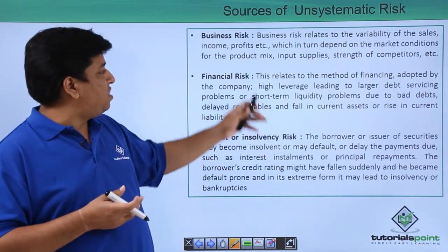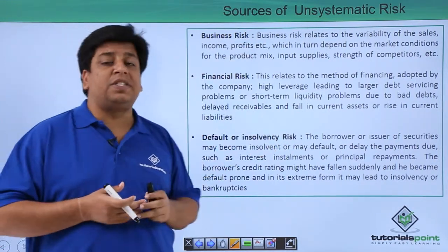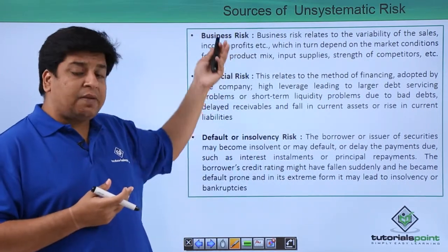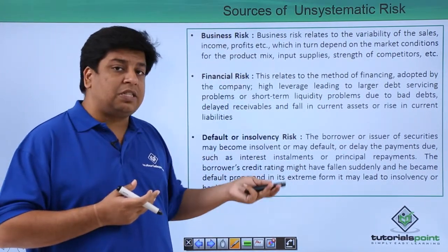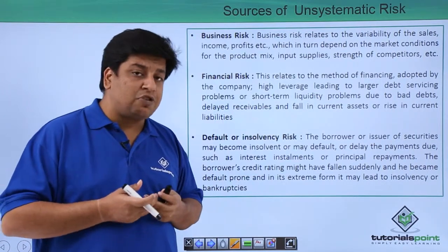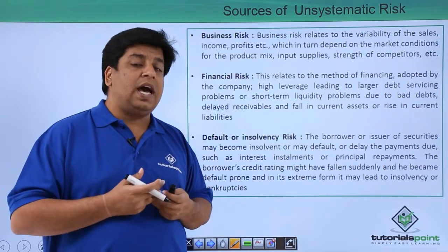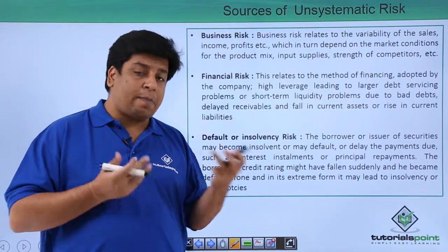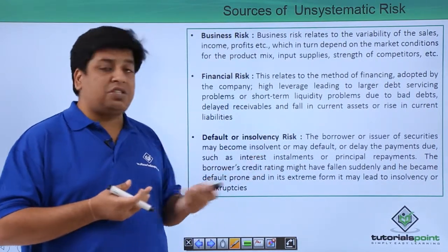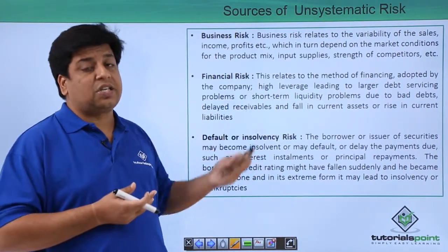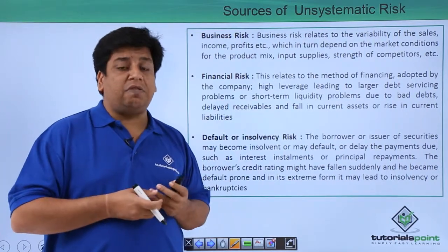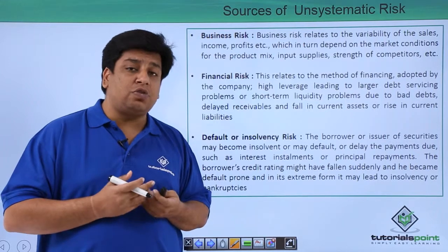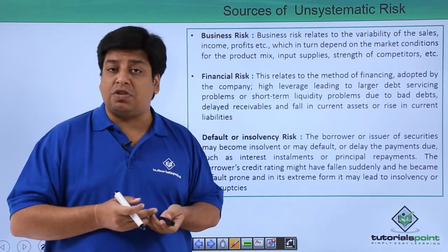Insolvency risk is an outcome of business risk and financial risk. So all three risks, by taking the right decisions in the business, are very much controllable and are within the hands of the business managers and top executives to take the right decisions. These risks, to a larger extent, are very much controllable. In the next video, we are going to see how we measure the risk.